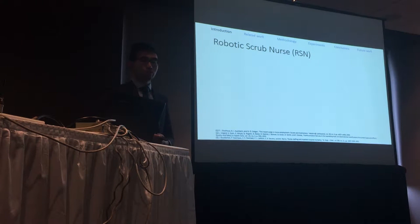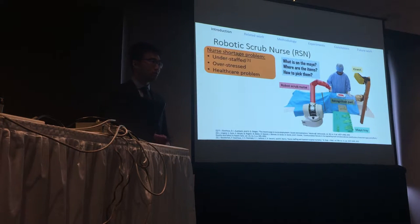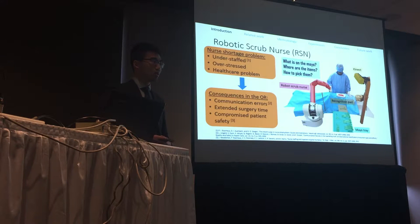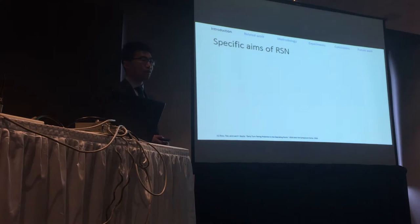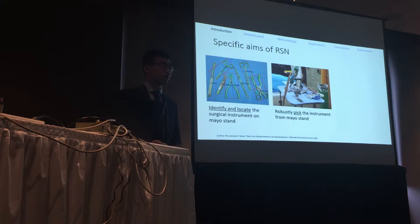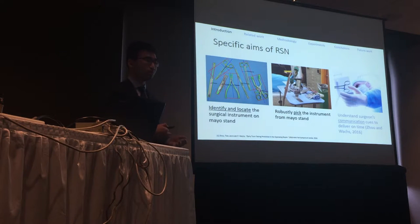To give some background: we are trying to build a robotic scrub nurse that can help the surgeon during surgery and essentially replace the nurse. There is a significant problem of nurse shortage, it's not always a fun job, and it has led to bad consequences in the operating room such as communication errors and extended surgery time. The specific aims include localizing and recognizing all surgical instruments on the mayo stand, robustly grasping the instrument using a robot gripper, and human-robot interaction so the robot can understand the surgeon's cues. The human-robot interaction part has been addressed in previous publication.